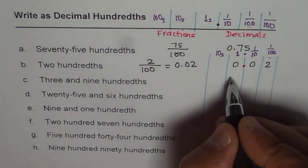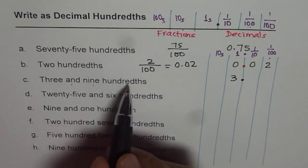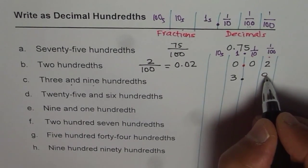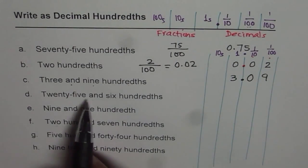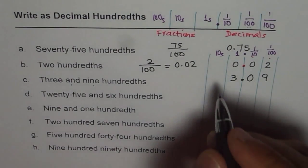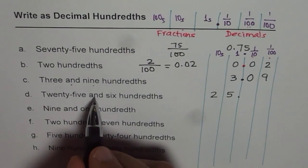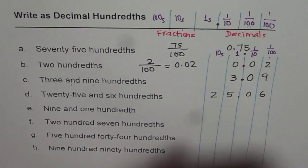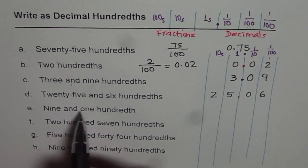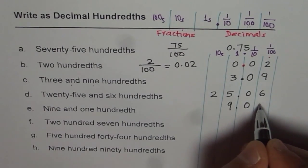Next: three and nine hundredths. The word 'and' means the decimal point position. Three is the number before the decimal, so we have 3 in the ones place, then the decimal, then 9 in the hundredths position. So we get 3.09 as the value. Next: twenty-five and six hundredths. Twenty-five is on the left side of the decimal, so we get 25.06.